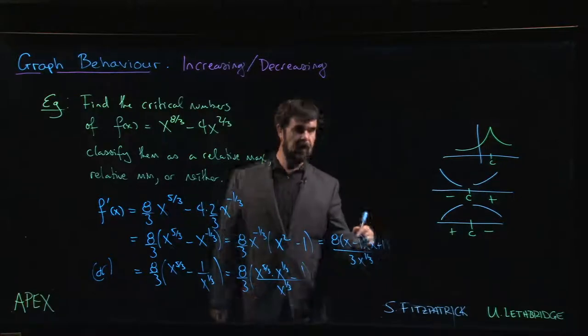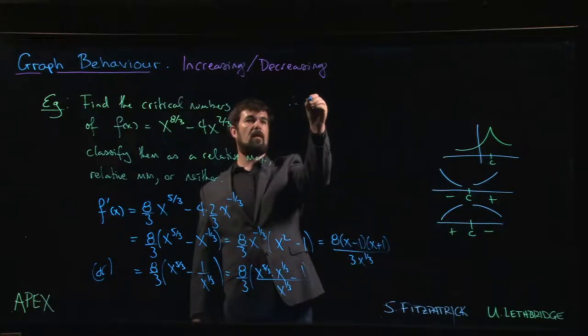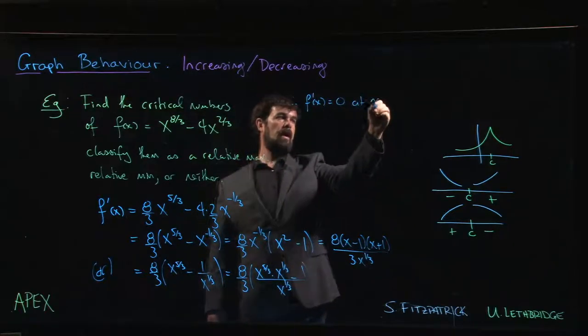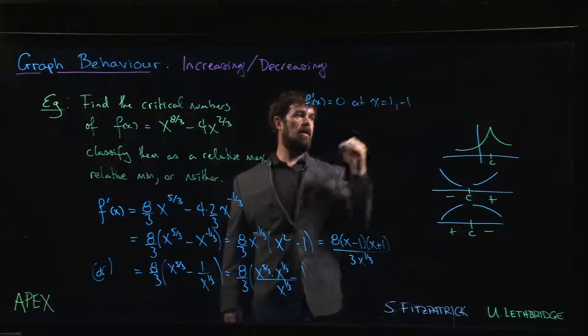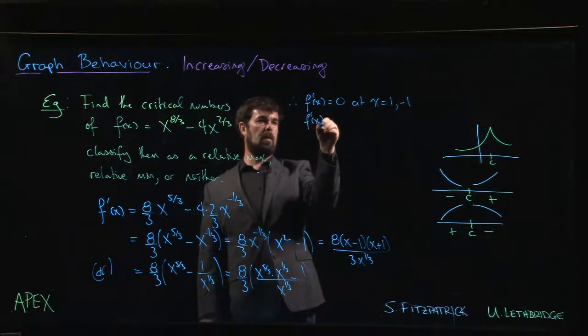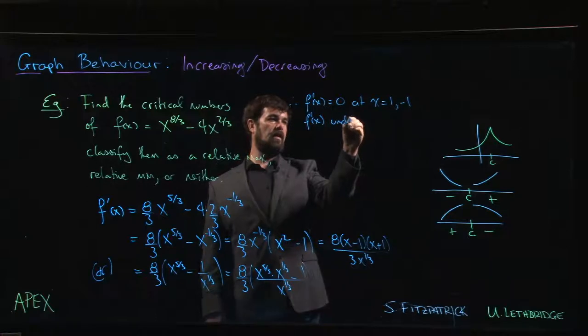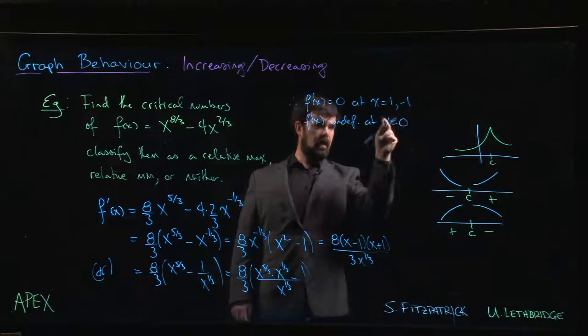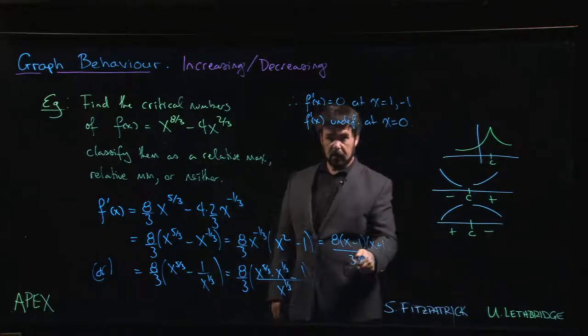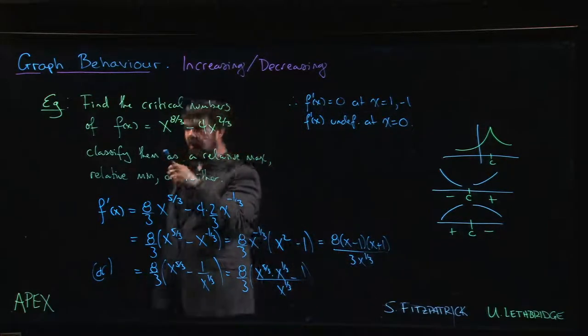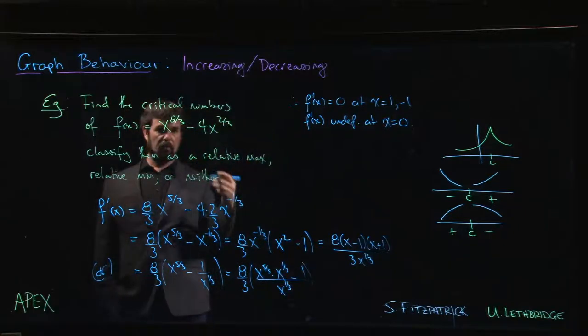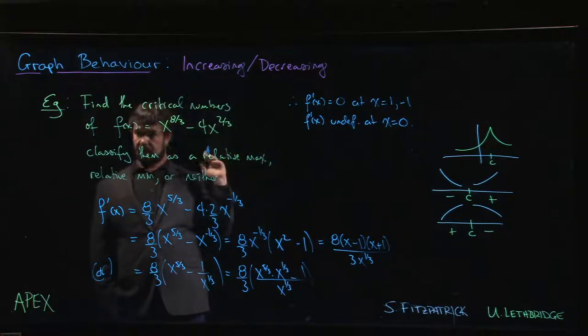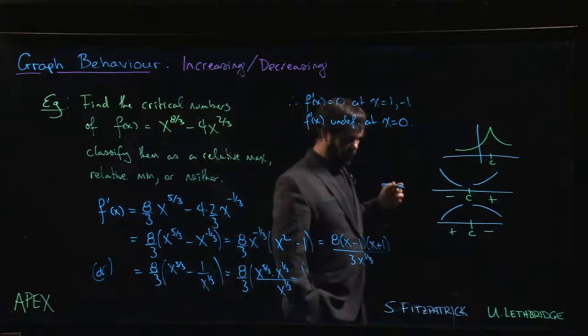That's interesting because what we get from here is f prime of x equals zero at x equals 1 and minus 1. But also f prime of x is undefined at x equals 0, and this is a critical number because f of 0 is defined - f of 0 is 0. So that is a point on the graph. We have a critical number where the derivative is undefined, which is interesting. We haven't seen too many of those.